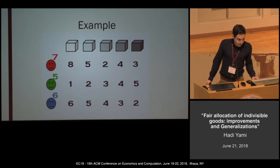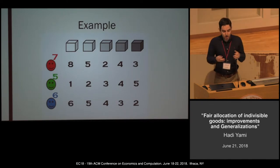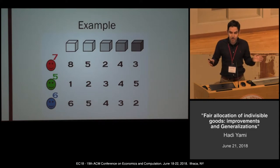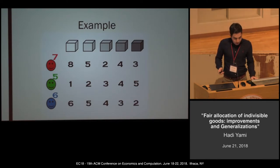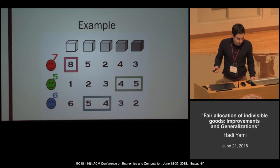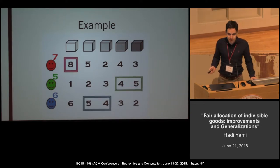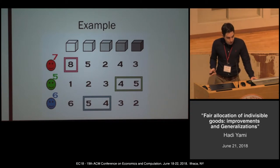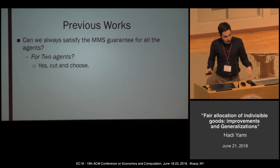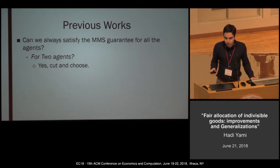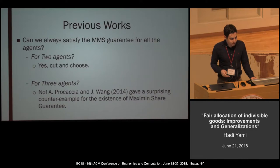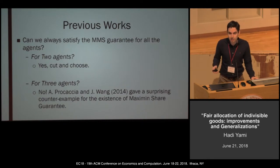Coming back to our example: can we always guarantee the maximin share for all agents? In the example, the answer is yes — there exists an allocation that guarantees MMS for all agents. When we have two agents, the answer is always yes using the cut-and-choose protocol. But unfortunately, when we have three or more agents, the answer is no. Procaccia and Wang in 2014 gave a surprising counter-example.